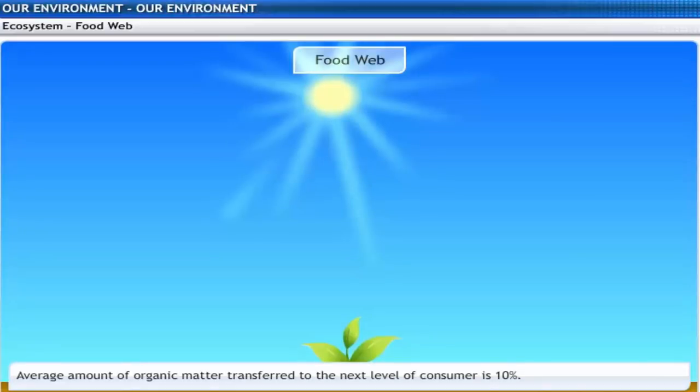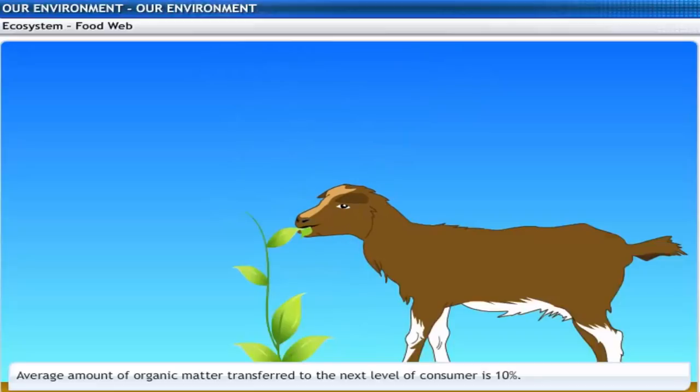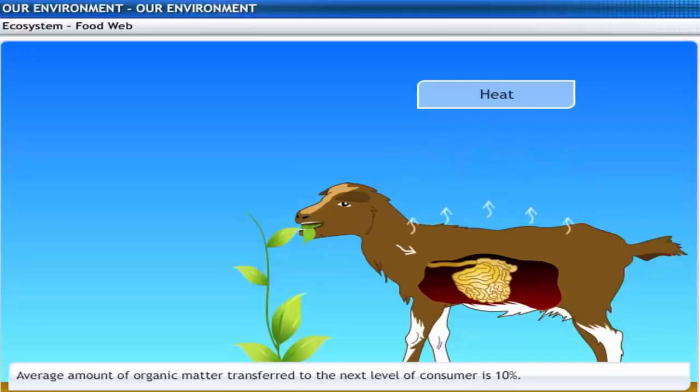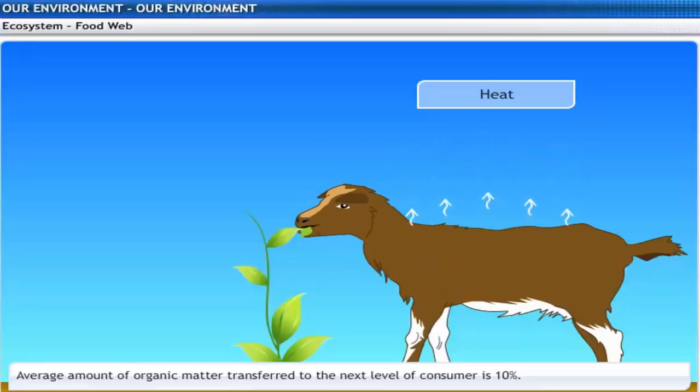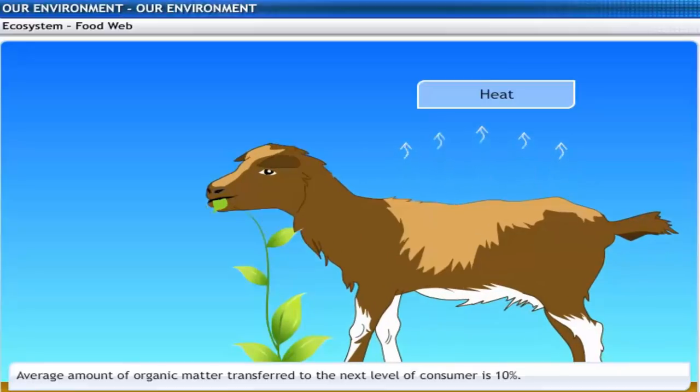The green plants in a terrestrial ecosystem capture about one percent of the energy of sunlight that falls on their leaves and converts it into food energy. When these green plants are eaten by primary consumers, a great deal of energy is lost as heat to the environment. Some amount goes into digestion and in work, and the rest goes towards growth and reproduction. An average of ten percent of the food eaten is turned into its own body and made available for the next level of consumers.